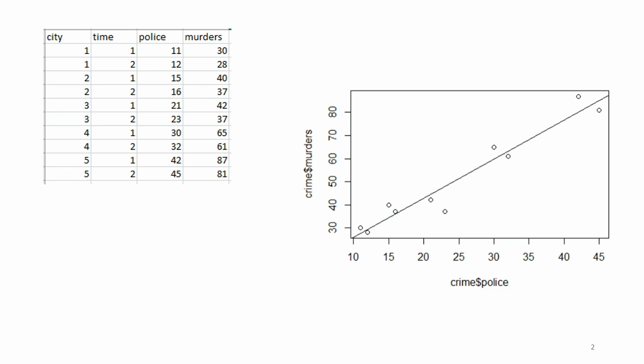So here we have a fictional dataset with numbers on the size of the police force and crime for five cities. Looking at the data format we can see that there are five cities indexed by one to five, there are two time periods one and two, and we have information on number of police in the police force and number of murders.